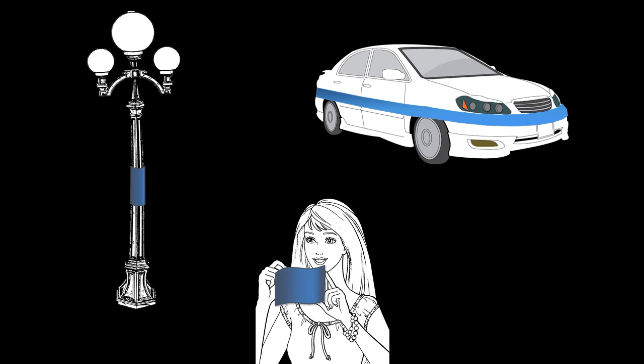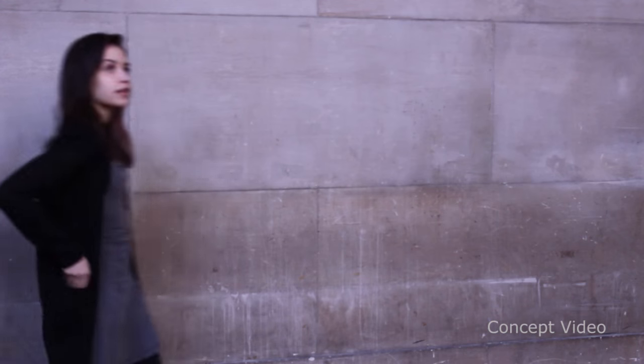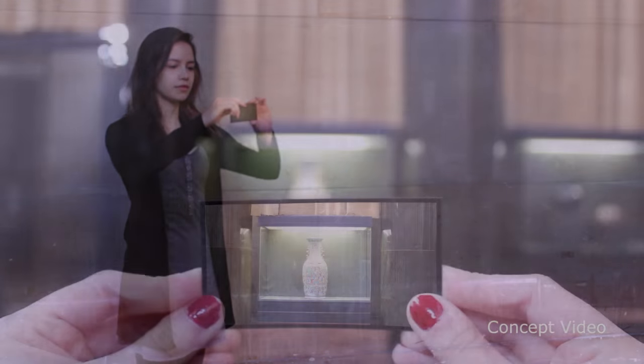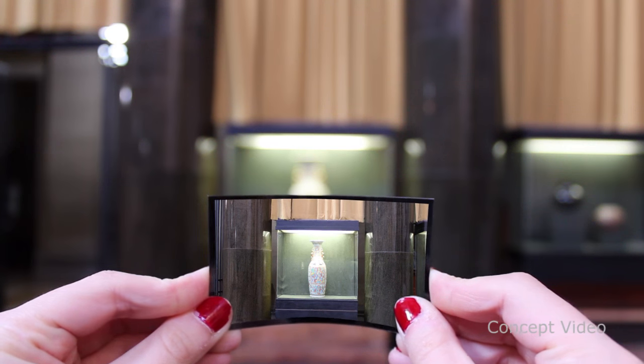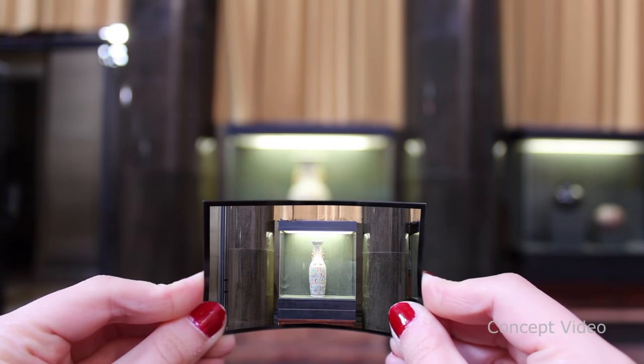Sheet cameras can also be used for photography. In the future, the camera could take the form of a credit card. In this concept video, the user changes the field of view by simply flexing the sheet.